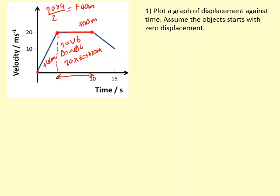Finally we have a trapezium over here. So this one here is a trapezium. We're going to use that formula from last time: s equals u plus v times t over 2. That gives us plus 75 meters.